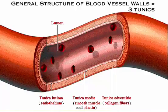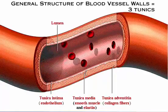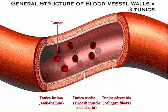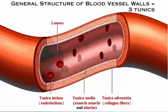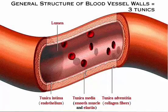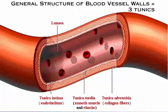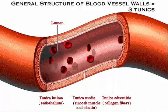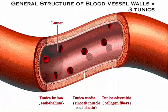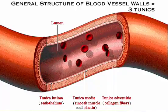The tunica adventitia is the outermost layer of the blood vessel wall. It is composed of loosely woven collagen fibers that protect the blood vessel and anchor it to surrounding structures.